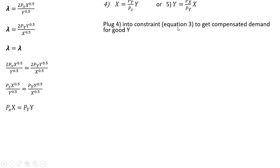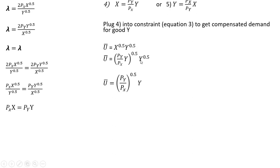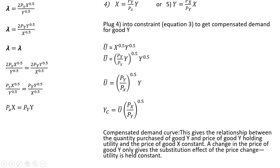We're going to plug equation four into the constraint to get the compensated demand curve for good y. Here's our constraint, and for x I'm plugging in price of good y divided by price of good x times y. Since x is raised to the 0.5, all of this is raised to the 0.5. Solving for y — y to the 0.5 times y to the 0.5 is y — our compensated demand for good y gives the relationship between the quantity purchased of good y and the price of good y, holding utility and the price of good x constant. A change in the price of good y only gives the substitution effect of the price change, because utility or real income is being held constant.